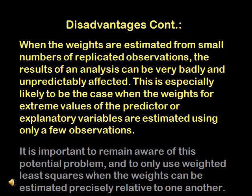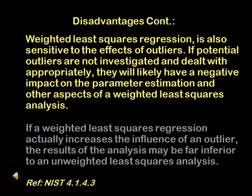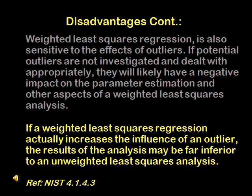The variables, as explained in an earlier slide, is the difference between the predicted and calculated responses. It is important to remain aware of this potential problem and to only use weighted least squares when the weights can be estimated precisely relative to one another. NIST also cautions that weighted least squares regression is sensitive to the effects of outliers. If the outliers are not investigated and dealt with appropriately, they will likely have a negative impact on the final results. NIST concludes by saying that if a weighted least square regression actually increases the influence of an outlier, the results of the analysis may be far inferior to an unweighted least square analysis.